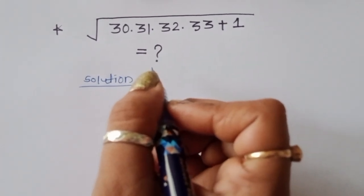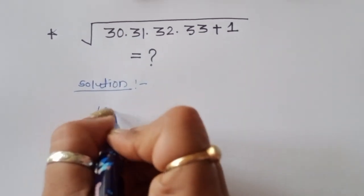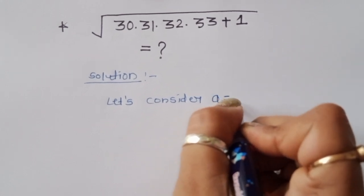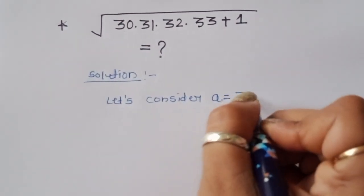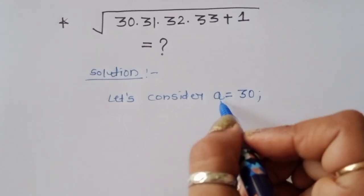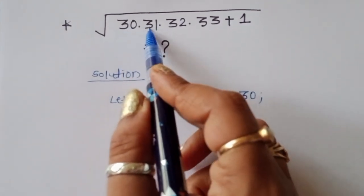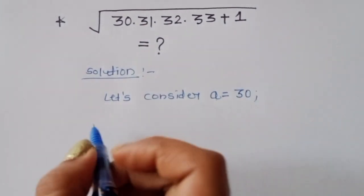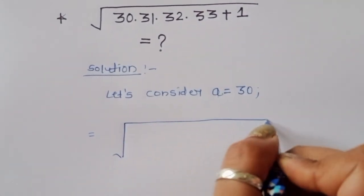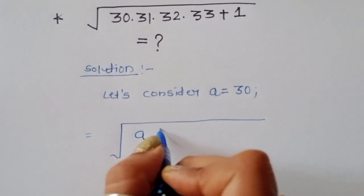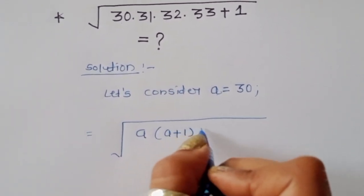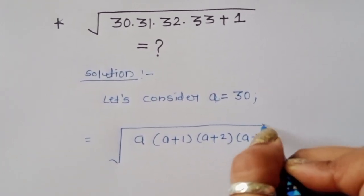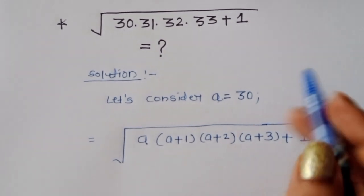This is a very easy method. Let's consider a equal to 30. If a equals 30, then we can write the four consecutive terms as a, a plus 1, a plus 2, and a plus 3. Substituting, the expression becomes a times (a+1) times (a+2) times (a+3) plus 1.